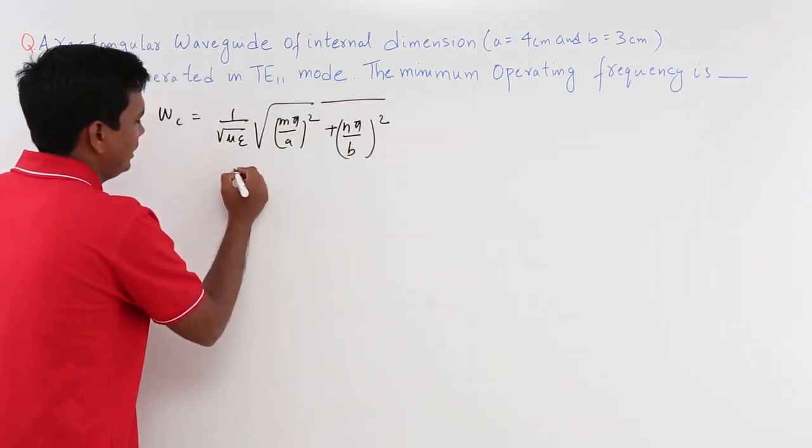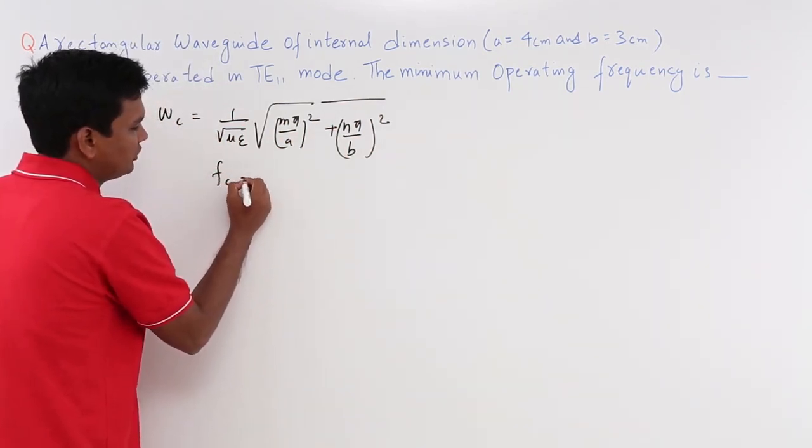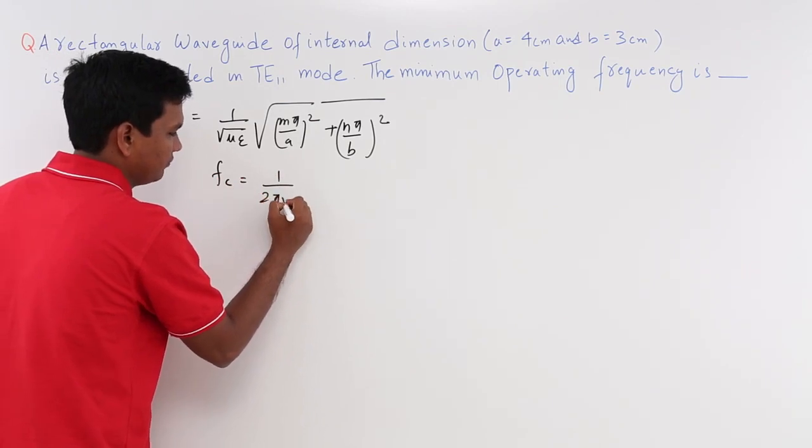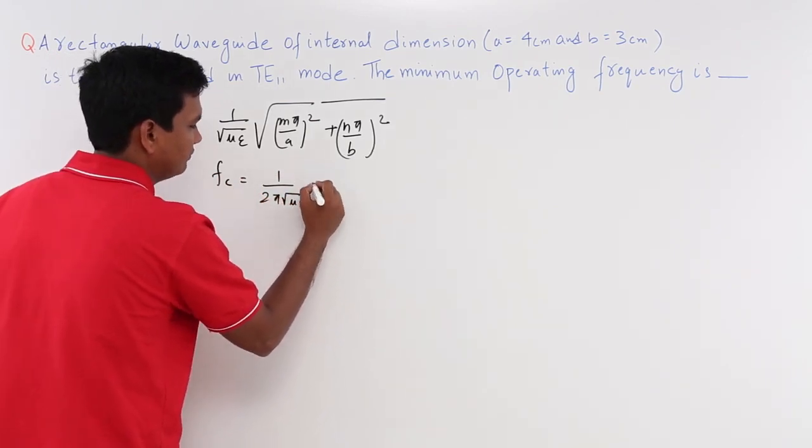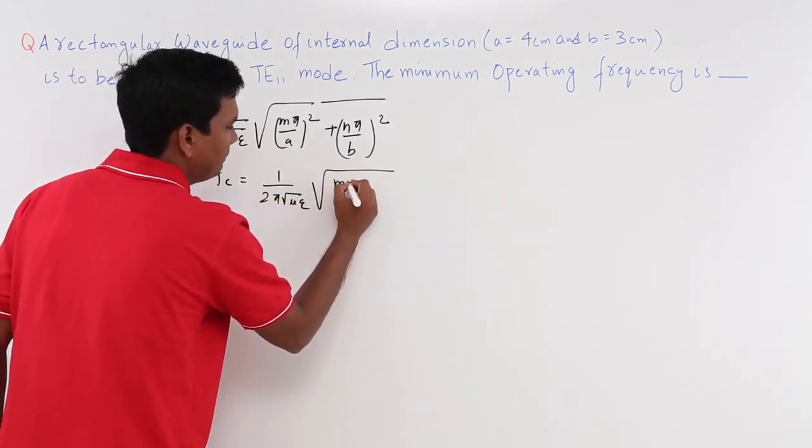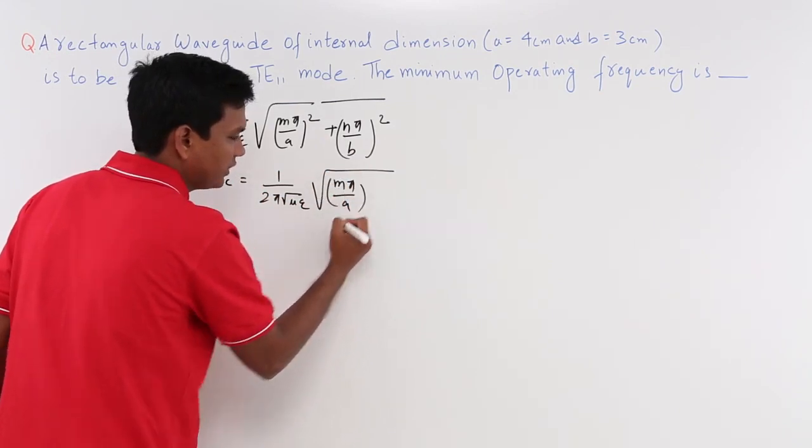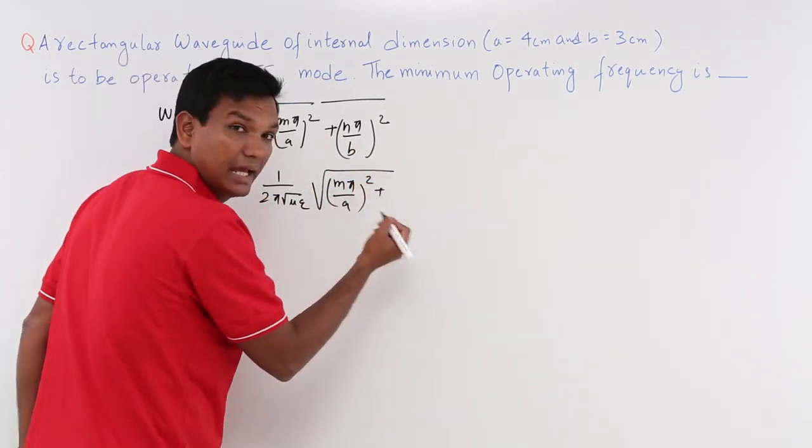So what would be F? The cutoff frequency will be 1 by 2 pi mu epsilon, m pi by A whole square plus n pi by B the whole square.